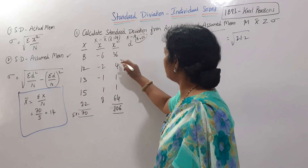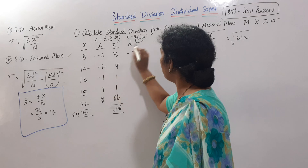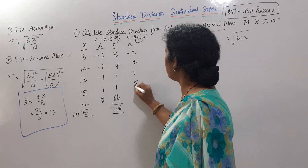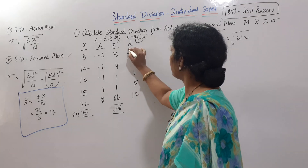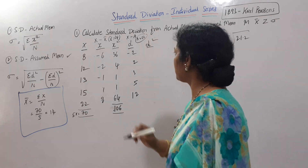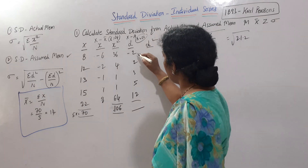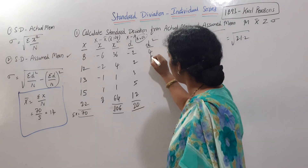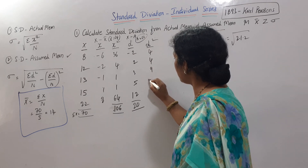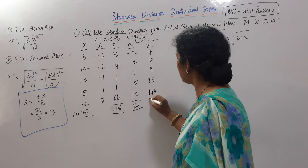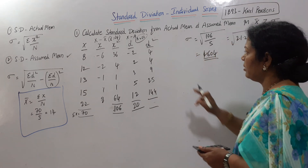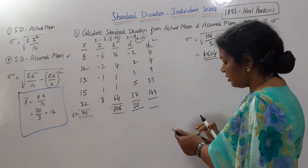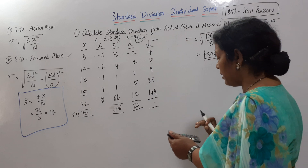The deviations from assumed mean A = 10 are: 8 − 10 = −2; 12 − 10 = 2; 13 − 10 = 3; 15 − 10 = 5; and 22 − 10 = 12. The total sigma D = 20. Squaring: 4, 4, 9, 25, 144. Sigma D² = 4 + 4 + 9 + 25 + 144 = 186.